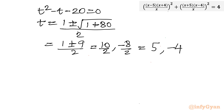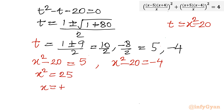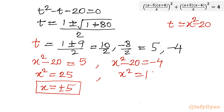Substituting back t equals x squared minus 20: for t equals 5, we get x squared minus 20 equals 5, so x squared equals 25, giving x equals plus or minus 5. For t equals minus 4, x squared minus 20 equals minus 4, so x squared equals 16, giving x equals plus or minus 4. Method 2 is done.